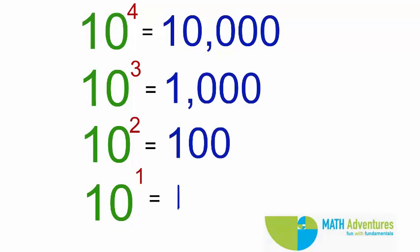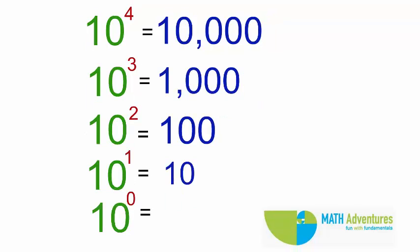10 to the power of 1 is nothing but 10. If you observe this pattern, you will find that if 10,000 is divided by 10, I get 1000.